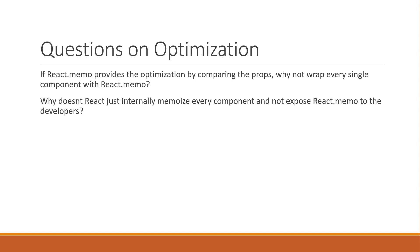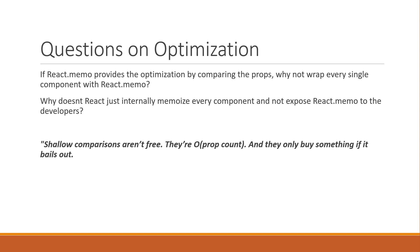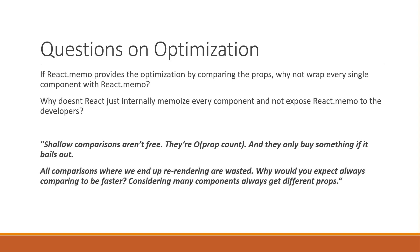To answer this question, I'm going to quote Dan Abramov: "Shallow comparisons aren't free. They are O of prop count time complexity and they only buy something if it bails out. All comparisons where we end up re-rendering are wasted. Why would you expect always comparing to be faster considering many components always get different props?" I can't put that in even simpler terms, but let's make use of some math to understand what he's saying.